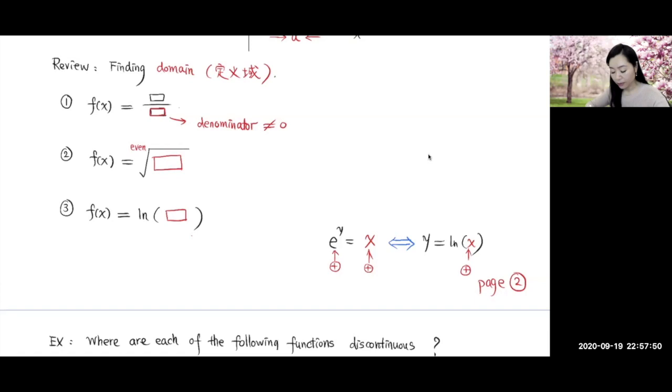Number two, if the function involves an even root of some function inside, then it's required that this radicand inside this even root has to be greater than or equal to zero.